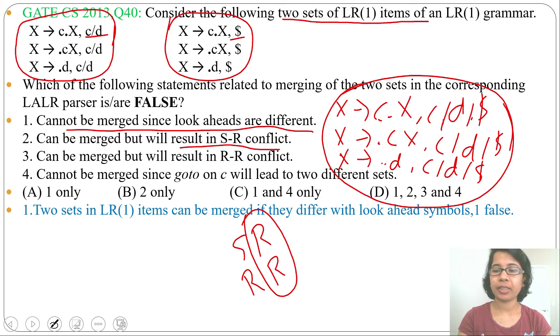If we see in all productions, dot is not at the end. There is no reduction present. So there is no chance of SR conflict. Statement 2 is false.